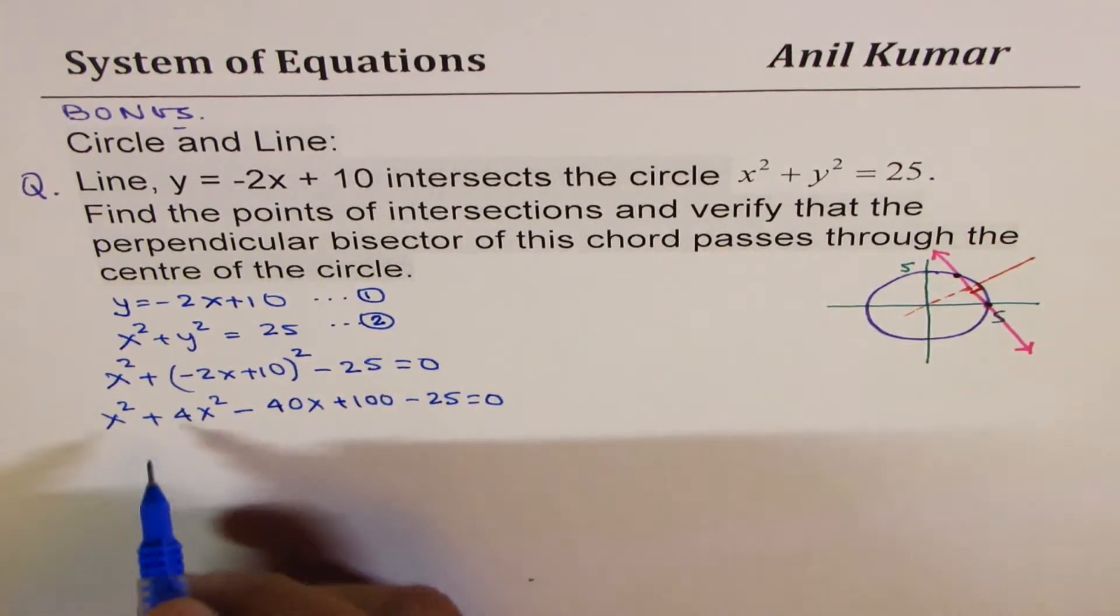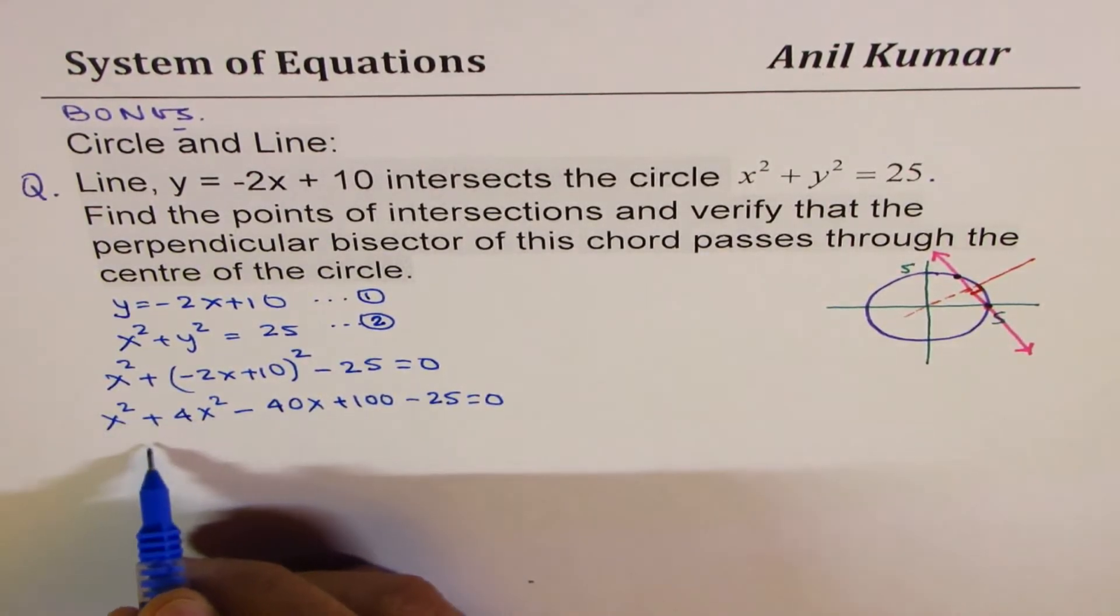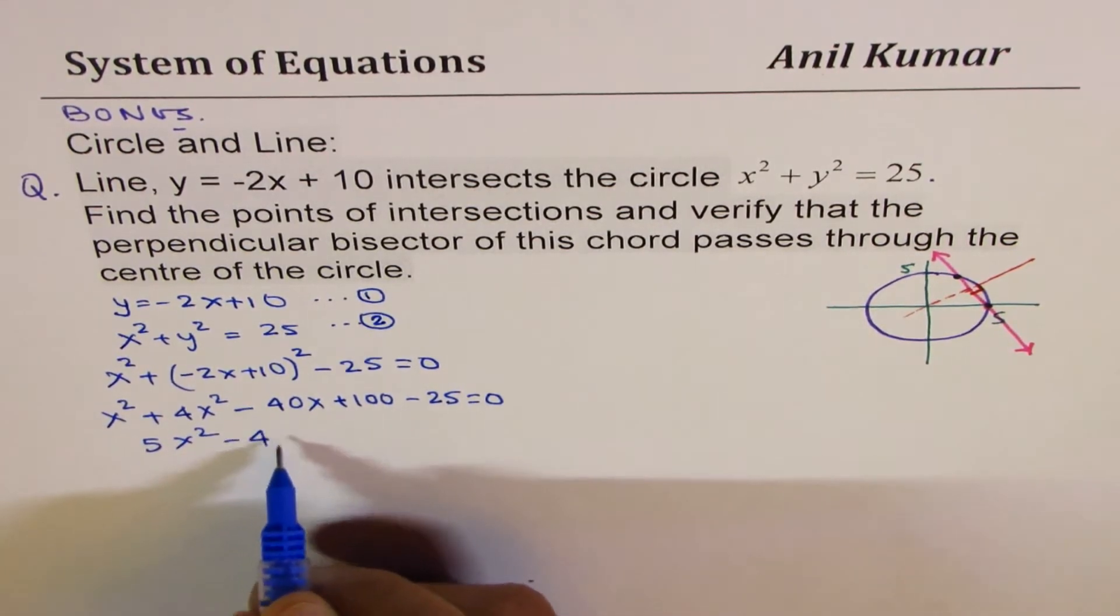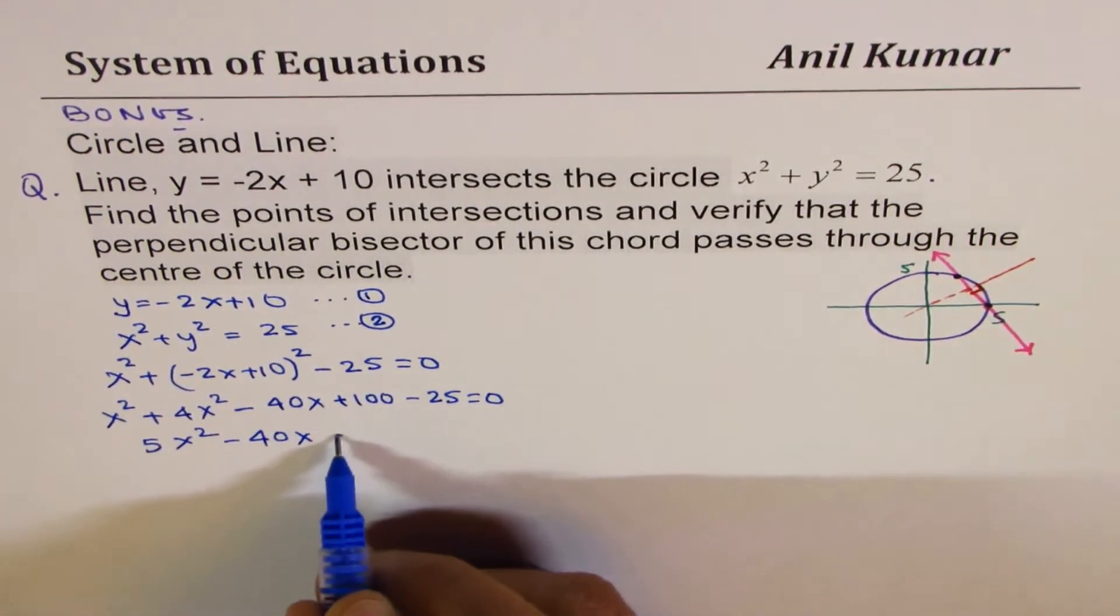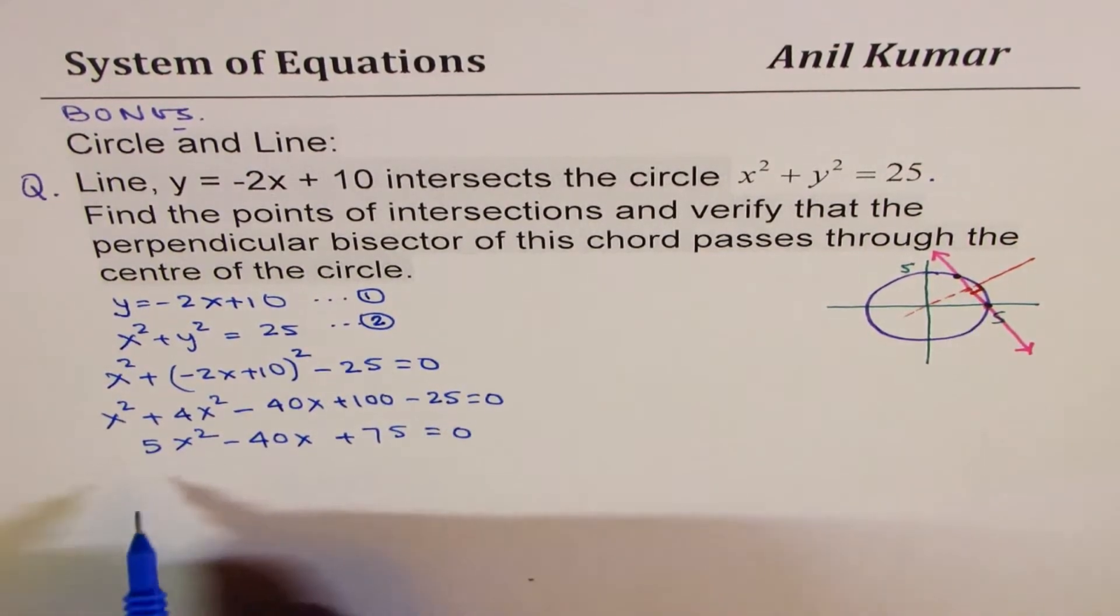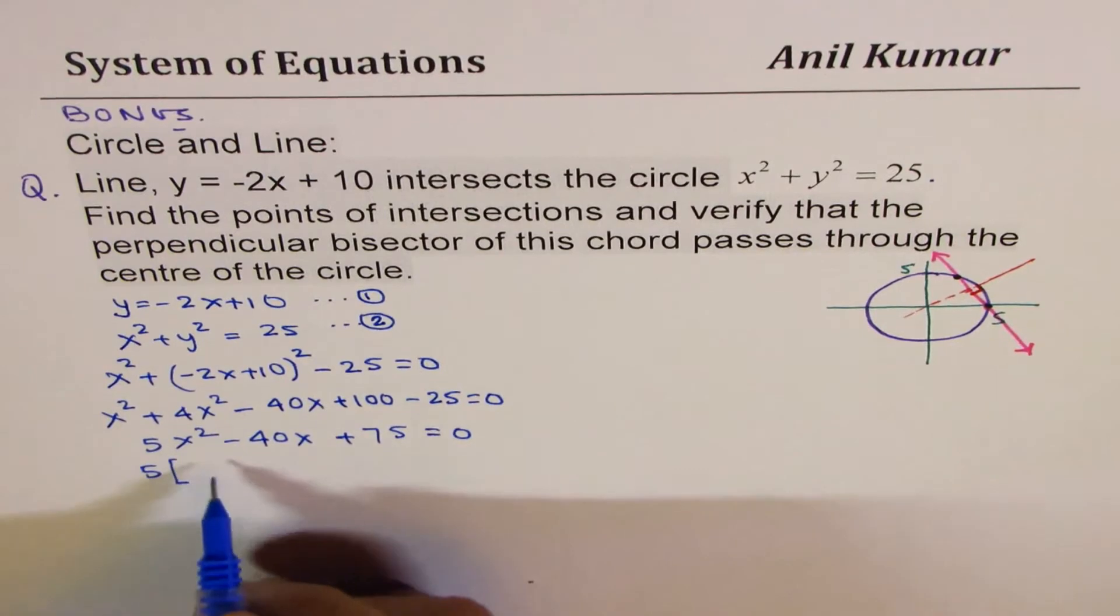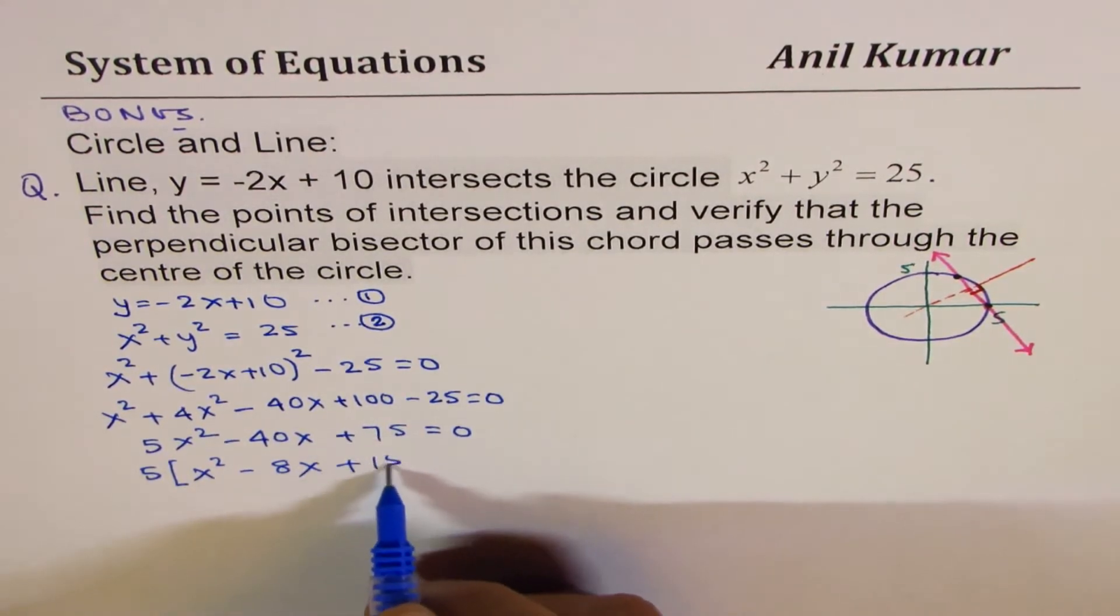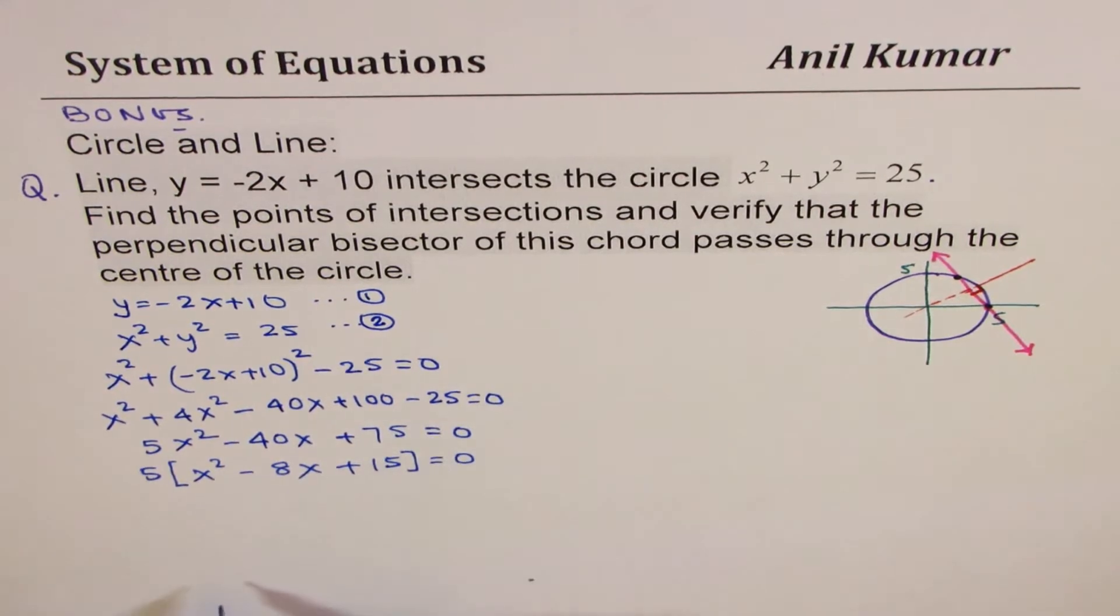Now we can combine the like terms. x squared plus 4x squared is 5x squared. We have minus 40x, that is plus 75 equals 0. Let's take 5 common factor: x squared minus 8x, 5 goes 1 times, and then 25 means plus 15.